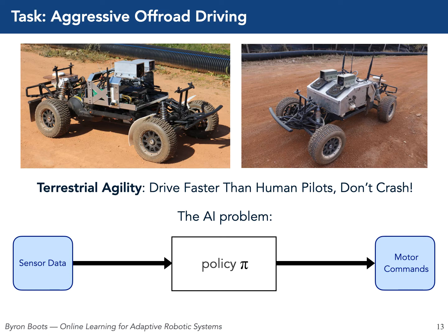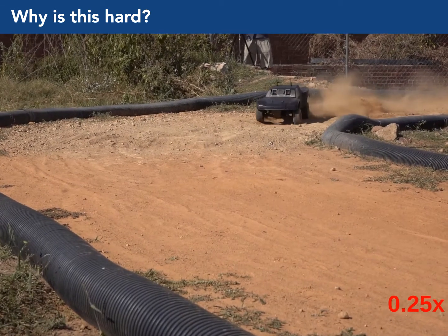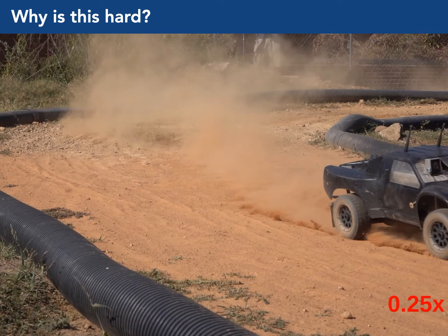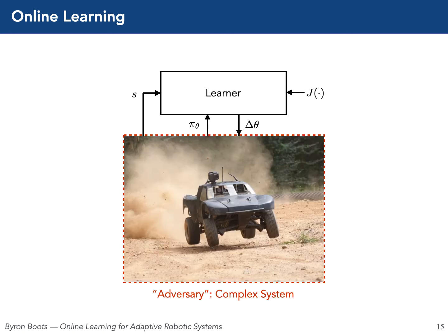Now the main question is: how do we design a policy that will control this vehicle at high speeds over rough terrain without crashing? Here's a slow motion video of the dynamics of our car taking a turn at high speed. You can see that the car is bouncing and sliding, exhibiting behavior which is hard to predict and virtually impossible to simulate accurately from first principles. So how do we control a car where it's very difficult to make really accurate predictions? We're going to think about the problem of generating a policy to control the vehicle as an online learning problem, where the learner is tasked with choosing a good sequence of policy parameters.